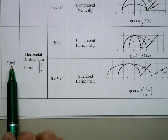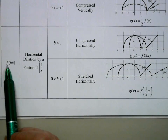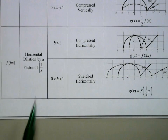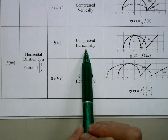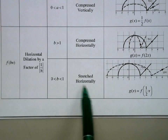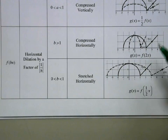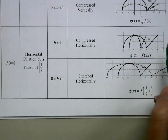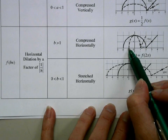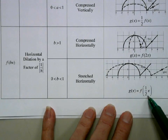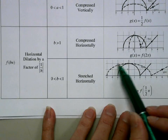If we multiply the x value by some constant — f of bx — that gives a horizontal dilation by a factor of 1 over b. So if b is bigger than 1, the graph gets compressed horizontally. If b is between 0 and 1, it gets stretched horizontally. For example, g of x equals f of 2x changes by a horizontal factor of 1 half, so the point at 2 gets pushed to 1 and negative 2 gets pushed to negative 1. Conversely, a horizontal dilation by a factor of 2 stretches it, so the point at 2 becomes 4.